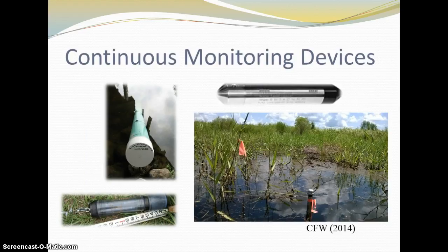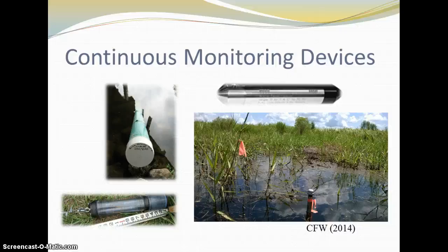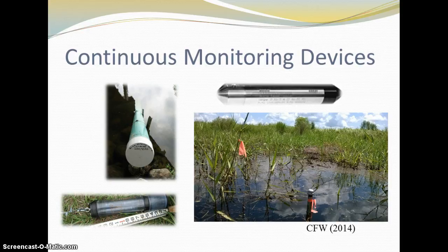Above, we have focused on grab samples, but continuous monitoring devices are also used. These devices are placed in the field and record continuous readings of desired water quality parameters. Site selection and placement is key, and selecting equipment that is low maintenance is important when practical. Data validation and processing are required. Wagner, Bulger, Oblinger, and Smith (2006) of the U.S. Geological Survey (USGS) offer guidance on Standard Operating Procedures (SOPs) in the report USGS Guidelines and Standard Procedures for Continuous Water Quality Monitors: Station Operation, Record Computation, and Data Reporting.